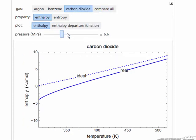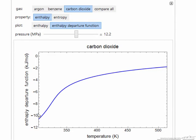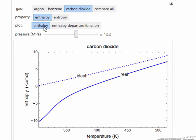I can change the pressure, and the enthalpy for the ideal gas doesn't change, but for the real gas, as the pressure gets higher, the deviation is larger. The difference between these two is the departure function, which is plotted here. Notice there's a difference in scale between these two.